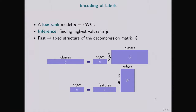One can look at LITTLES as a low-rank model. It learns the representation in the space of the edges and then transforms it to the labels using matrix G. To do inference, we need only to find the highest values in w-hat. This can be done efficiently, thanks to the fact that the compression matrix G has a fixed structure.